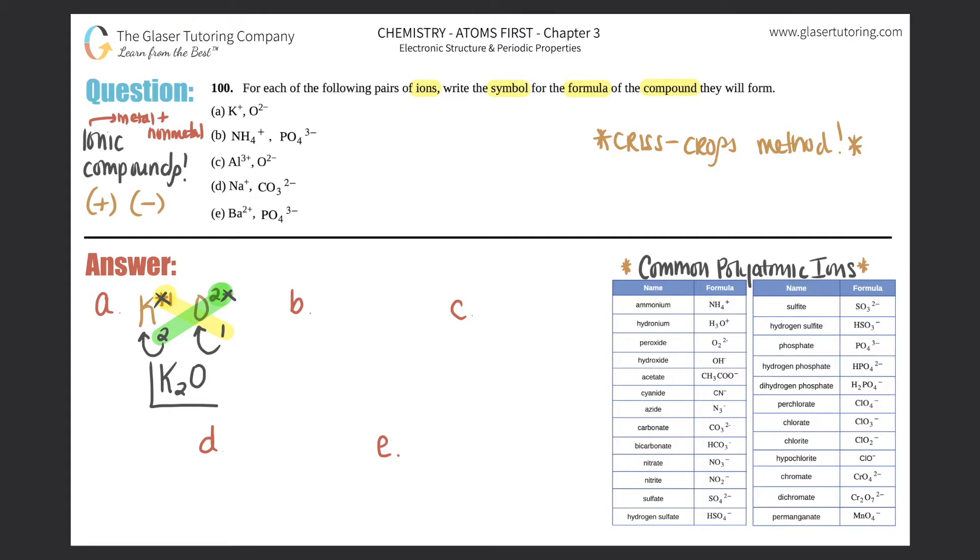Part b: we have two polyatomics. We have NH4+, so that's a +1 - that's ammonium. As you noticed, ammonium is always going to be NH4+. This is what I'm talking about with memorizing them - it will help you a lot for later chapters. This is coming in with PO4 3-. PO4 3- is phosphate, and if you've noticed, phosphate will always be PO4 3-, never a 2- or 1-.